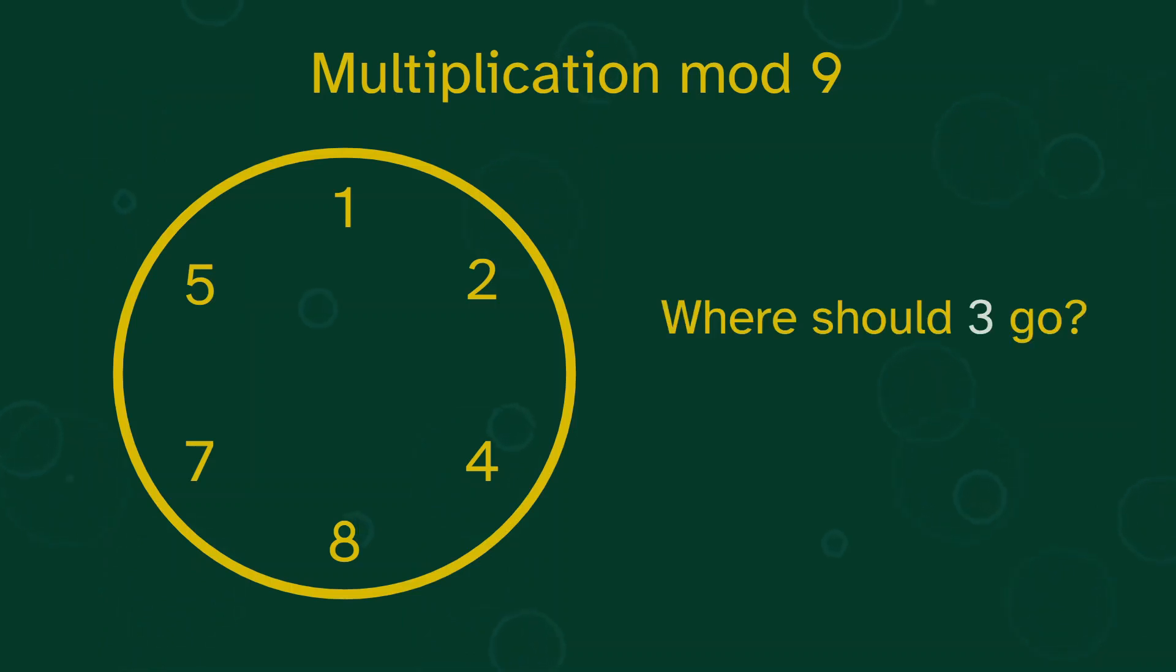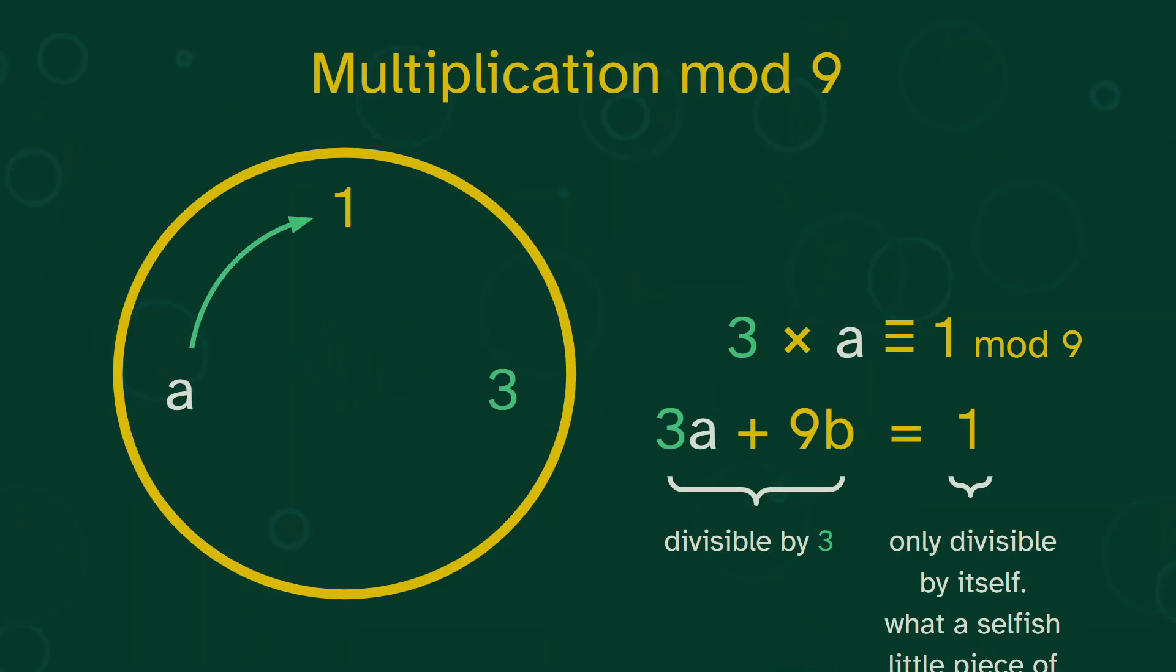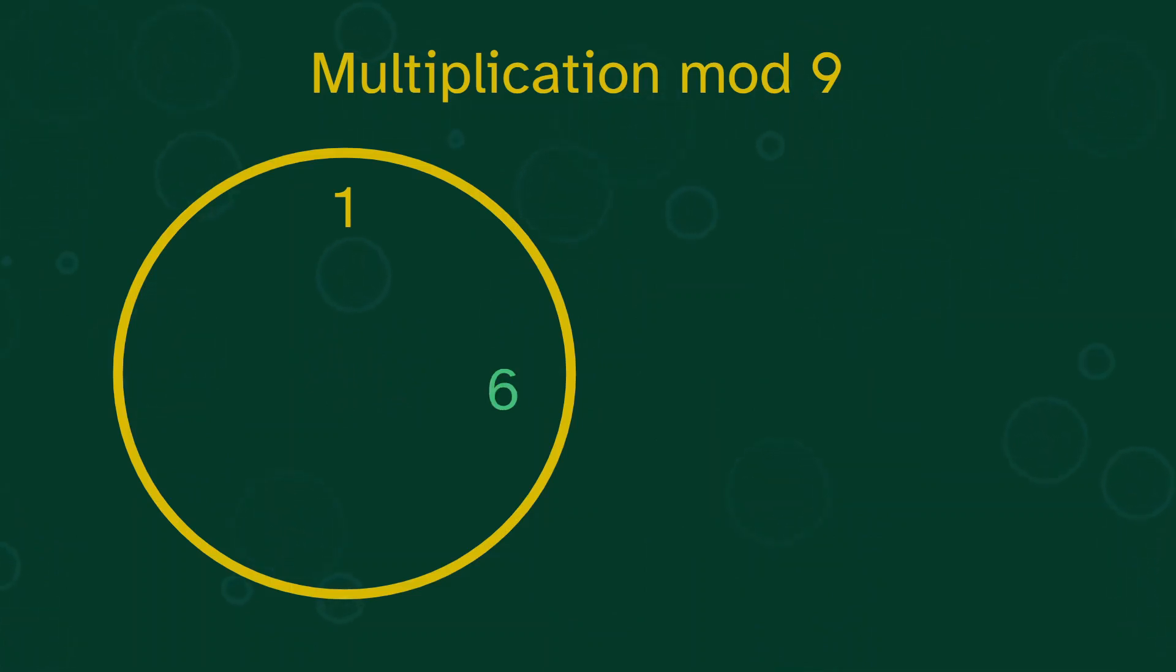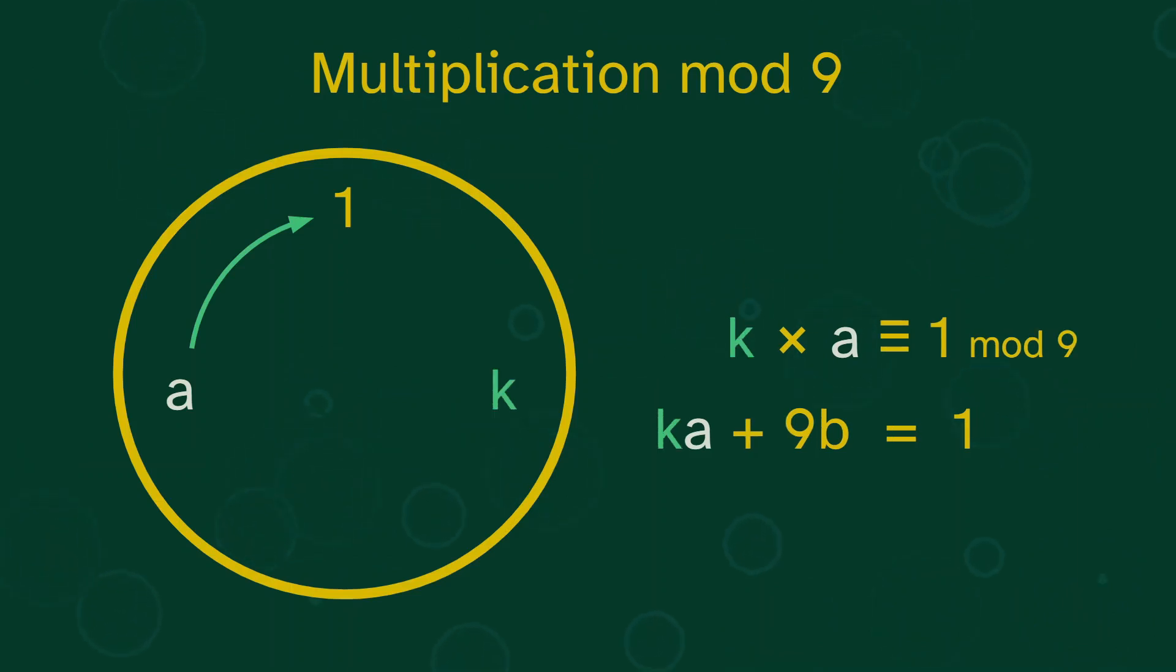Next, where should 3 go? 3 can't go on the clock. Why not? Well, let's assume that 3 is somewhere on the clock. What's opposite from it? Let's call it a. This distance multiplies by 3, so 3 times a must be 1 mod 9. Which implies that 3a plus some 9b equals 1. But the left side is divisible by 3, and the right is not. This is impossible. 3 can't go on the clock. We'd run into the same problem if we tried putting 6 on the clock. Some k will only fit on the clock if the greatest common divisor of k and 9 is 1. If this is true, we say k is a unit.